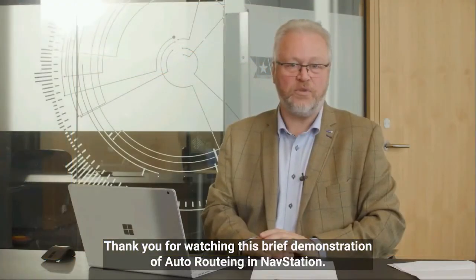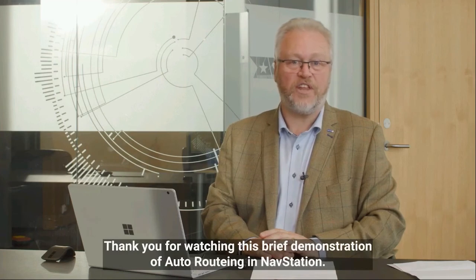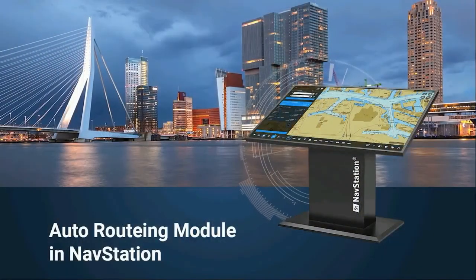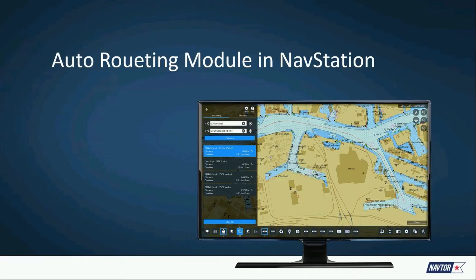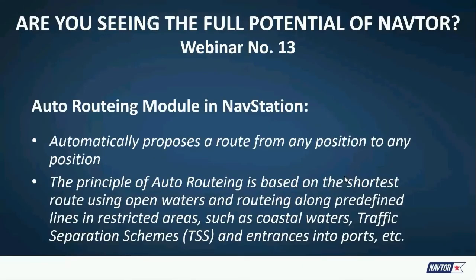Thank you for watching this brief demonstration on auto routing in NavStation. That was an interesting one — trying to change clothes that rapidly is very difficult! To wrap up: the auto routing module automatically proposes a route from any position to any position. We talked about port-to-port, berth-to-berth, and also own ship position to a destination — there are multiple iterations that can be used.